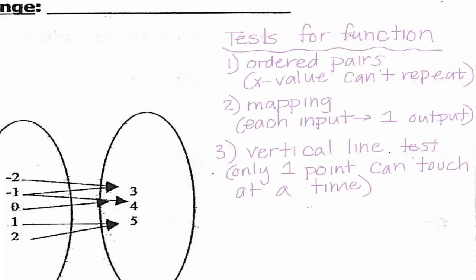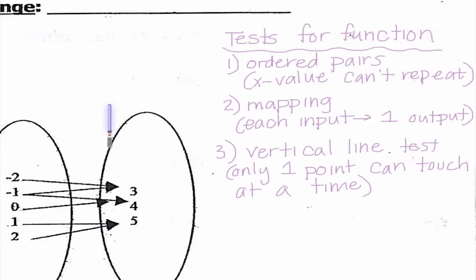The second test we call mapping. When we're mapping, it is a function if each input has exactly one output. If we have a graph, we're going to use what we call the vertical line test. I'm going to get out a really cool vertical line — in fact, it's a lightsaber. If I had a graph, I could use this and go straight across. Every point my weapon touches should only be touching that particular function once. If two points are touching this line at the same time, then I know it would not be a function.